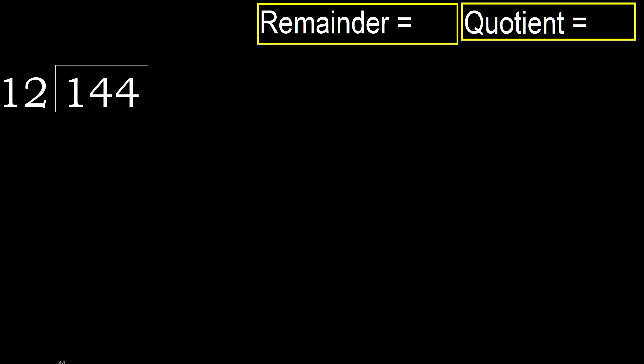144 divided by 12. 1 is less, therefore next. 14 is not less, therefore work with 14. Multiply 12 by whichever number is nearest to 14 but not greater. 12 multiplied by 2 is 24, which is greater.